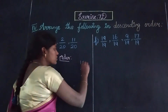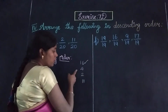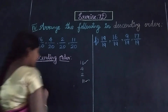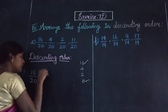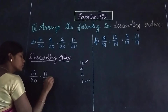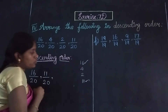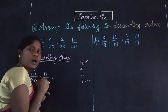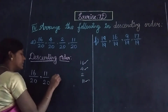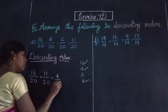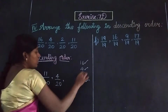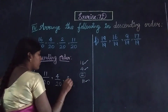Next, we turn away 16, and look at 4, 2, and 11. Among these, 11 is the greatest. So our next fraction is 11 by 20. Then 4 by 20. And the last one is 2 by 20.